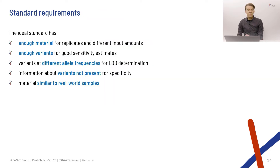With this background, let's look at what we need to perform such a validation. We need enough material of a standardized sample to do replicates and check different input amounts. The sample has to have enough variants so we can get sufficiently good sensitivity estimates. The variants need to be at different allele frequencies so we can determine our limit of detection. We need information about variants not present in the sample to assess specificity, and we want the sample material to be as close to real-world samples as possible.